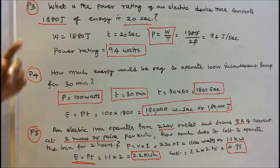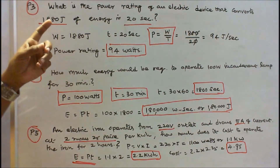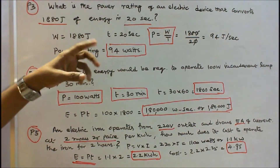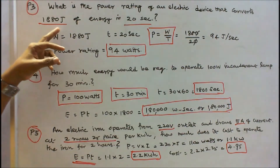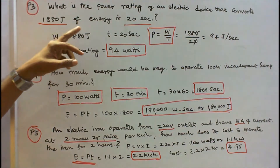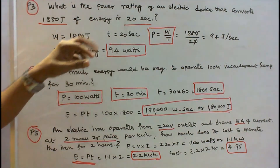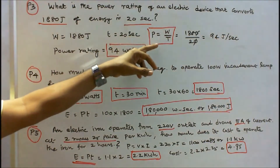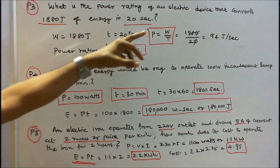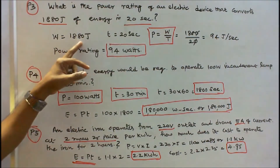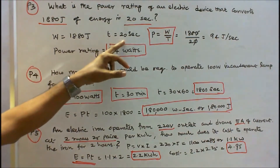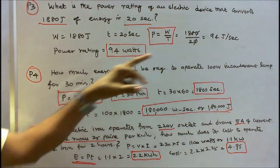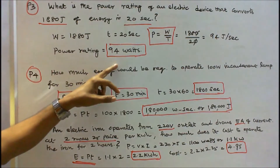Problem 3: What is the power rating of an electric device that converts 1880 joules of energy in 20 seconds? Using the formula P = W/t, with W = 1880 and t = 20, P = 94 joules per second, or the power rating is 94 watts.